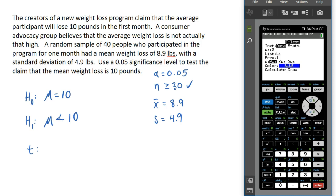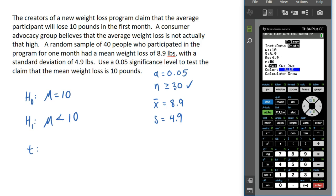If you have raw data, use Data; but we just have the stats, so go over to Stats. The first input is the null mean — mu sub-zero — which in our case is 10. Then it wants the sample mean, which is 8.9. Then the sample standard deviation, which is 4.9. And n, the sample size, is 40. The next line asks which kind of test we are doing. The middle option is the left-tailed test, and since our alternate hypothesis is a less-than statement, we want the middle choice highlighted. Then go down to Calculate.